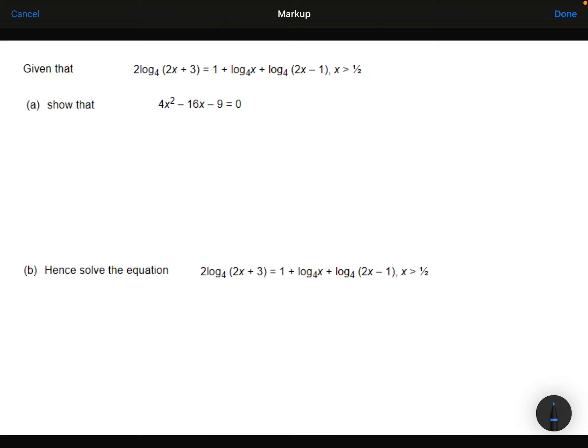Given that 2 log base 4 of 2x plus 3 is equal to 1 plus log base 4 of x plus log base 4 of 2x minus 1, where x is greater than a half, we need to show that 4x squared minus 16x minus 9 is equal to 0.